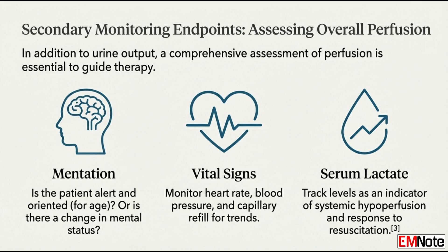So beyond urine output, what other clinical markers do we need to be assessing frequently to get a picture of overall systemic perfusion? You have to assess the patient's mentation — their level of consciousness and alertness — as a quick, non-invasive indicator of how well their brain is being perfused. Then you evaluate vital signs frequently: heart rate, blood pressure trends, and very importantly, serum lactate levels. A high or rising lactate gives you insight into persistent peripheral hypoperfusion — it's a sign that your current resuscitation might not be enough.